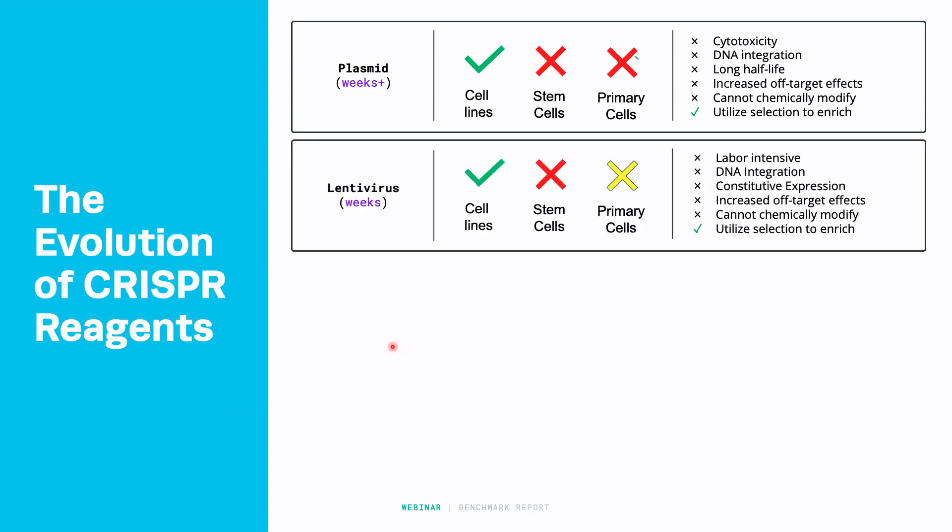Another form of CRISPR editing is using lentivirus to transduce a population of cells with viral particles. This works very well for immortalized cell lines and can work for some primary cells. However, it is well-documented that for some immune cells and IPS cells, they often react to lentivirus and can have an immune response, leading to more cytotoxicity. So lentivirus may not be applicable to every cell type. In addition, it's very labor-intensive to create lentivirus, and because lentivirus integrates into the genome, we get constitutive overexpression of the CRISPR components.